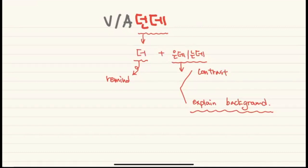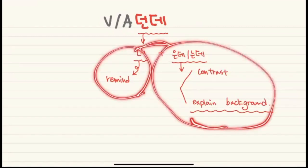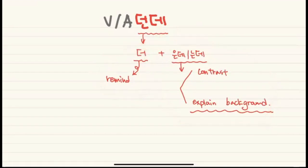For example, if I have two tickets and I go to someone and just ask 'will you go with me?' they might say 'are you crazy?' But if you explain the background — like 'I have a free ticket for two, so will you go with me?' — it makes sense. So these two functions combine to make 던데: reminding about the past and explaining the background together.